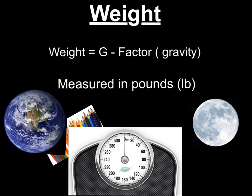Weight is another measurable property of matter. Weight is very different than mass, and a lot of people get them confused. The difference between weight and mass is weight has a g factor. The g factor is gravity, and gravity changes depending on where we're located. Weight is measured in pounds, abbreviated lowercase lb, and we measure our weight using a scale.